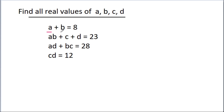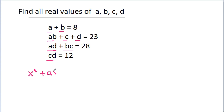So we have a, b, ab together, c, d, ad together, bc together, and cd together. So it is not a linear equation. And if you see these equations carefully, then if we multiply (x² + ax + c) and (x² + bx + d)...